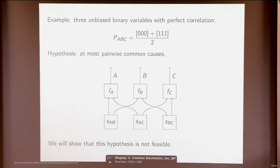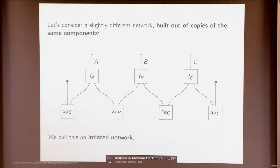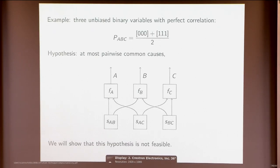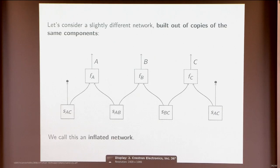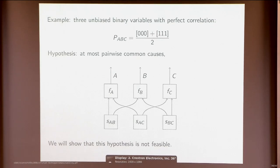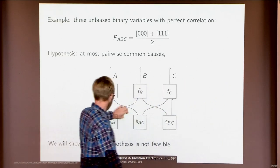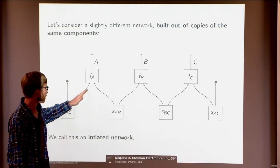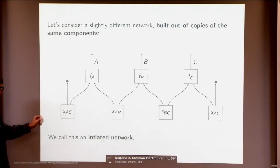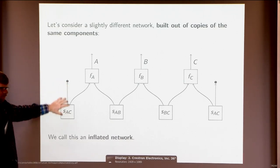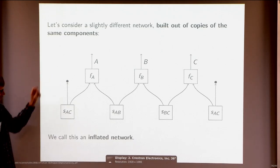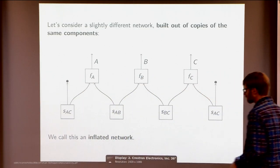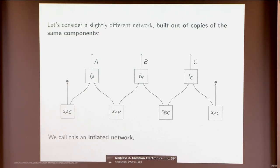To prove this, I take the components of the network and make copies of them, then rewire them in a different way. Specifically, I take two copies of SAC: I move one copy to the left and another to the right, and then discard one half of what comes out of each source morphism. This gives a new network called an inflated network.